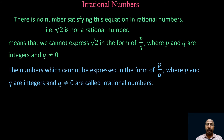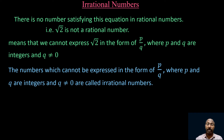We know that numbers which can be expressed in the form p/q are called rational numbers. But root 2 cannot be expressed in the form p/q, so root 2 is not a rational number. The numbers which cannot be expressed in the form p/q, where p and q are integers and q ≠ 0, are called irrational numbers. That is the definition of irrational numbers.